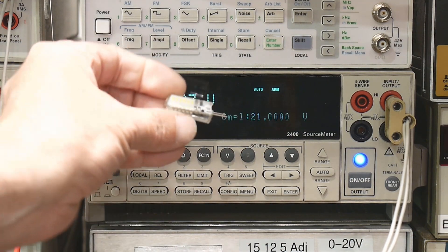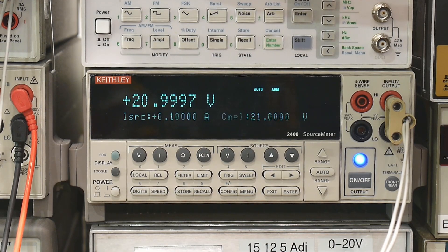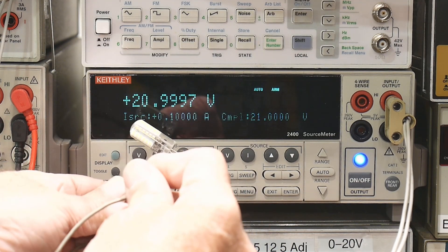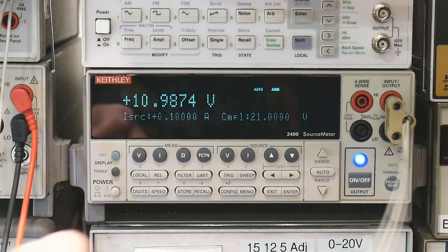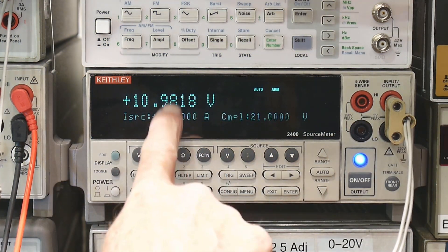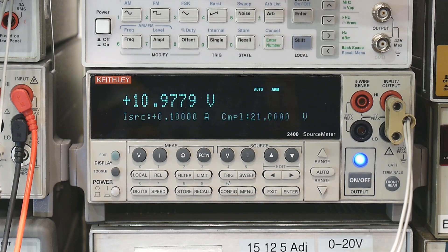And now I'm going to take an LED. This is that 12 volt LED I always use. And I'm going to hook it up. And we can see that it's taking the 100 milliamps, but it's only using 10.97 volts to do that.